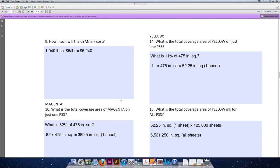We'll move on to yellow ink pricing now. And again, we need to identify what the percentage of coverage area for yellow ink is. Our problem tells us that one sheet of paper has 11% ink coverage of yellow. So we need to ask ourselves, what is 11% of 475 square inches?